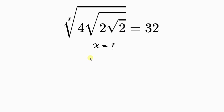Welcome back to my YouTube channel. Let's solve this math question that says: find the value of x for which the x-th root of 4 times the square root of 2 times the square root of 2 is equal to 32.